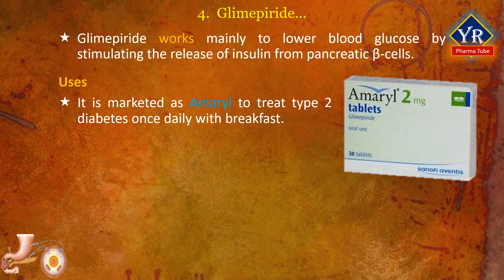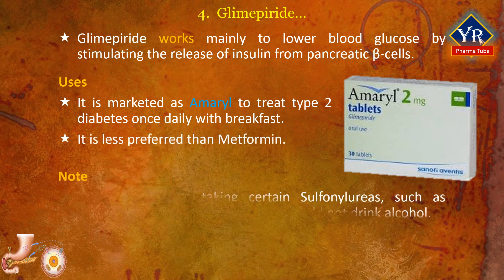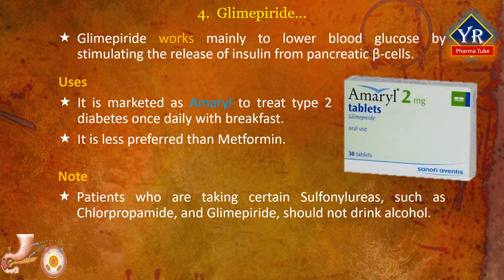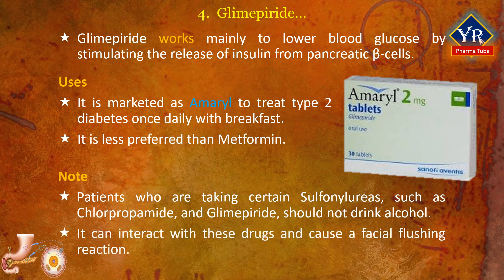Glimepiride is marketed under the brand name Amaryl as oral tablets and is typically administered once daily with breakfast. It is used to treat type 2 diabetes and it is less preferred than metformin. Note: patients who are taking certain sulfonylureas such as chlorpropamide and glimepiride should not drink alcohol, as it can interact with these drugs and cause a facial flushing reaction.